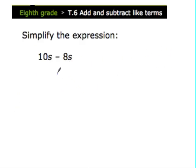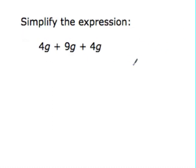Okay, let's do some more. So 10s minus 8s, 10 minus 8 is 2, and we're talking about s's. Okay, these are all g terms. 4 plus 9 is 13, 13 plus 4 is 17g.